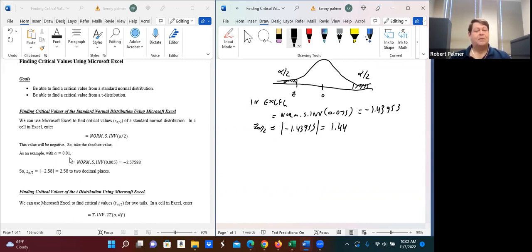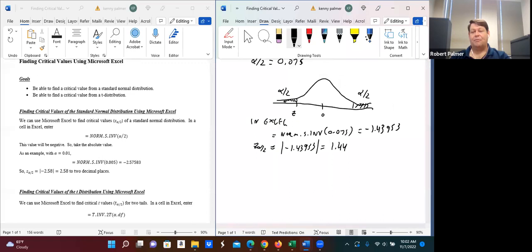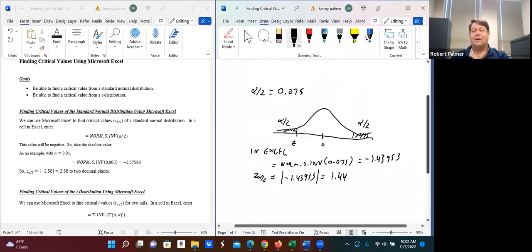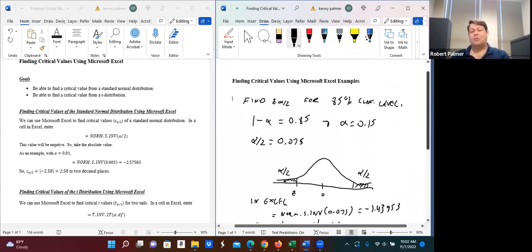This example here shows, this example of alpha 0.01, it's the same thing. So we can do unusual values, values that are not the usual confidence levels, ones that are not 90%, 95%, or 99%.